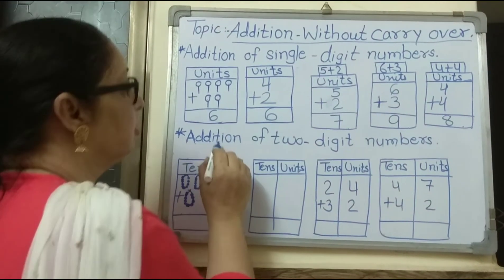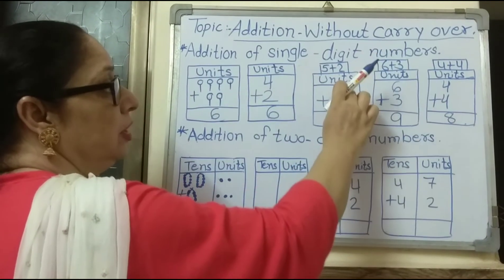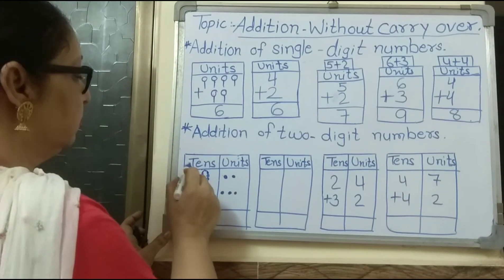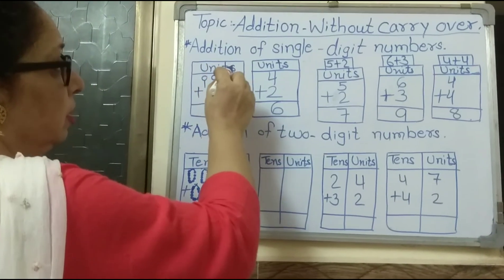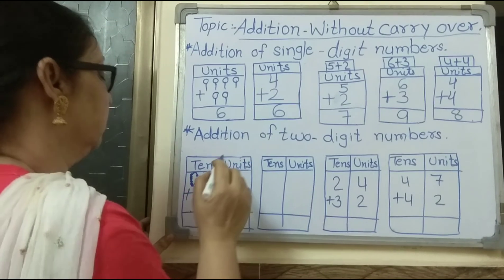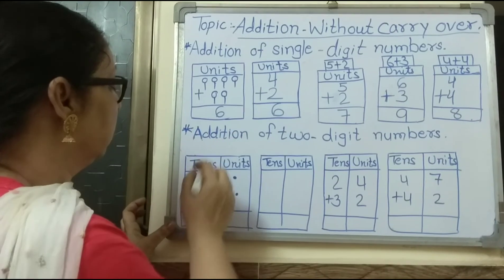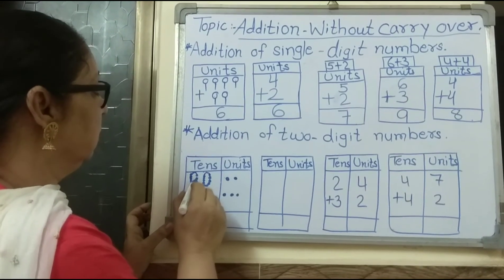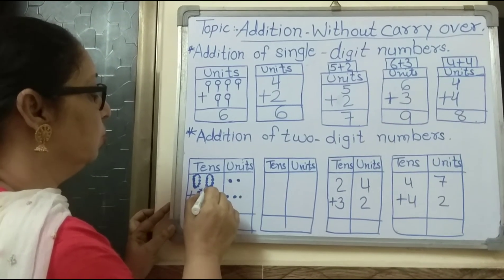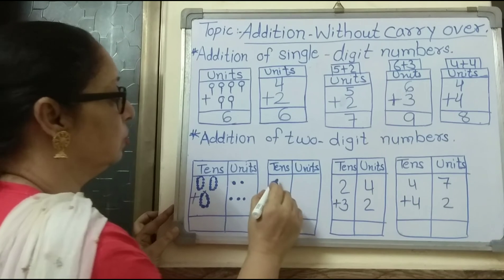Now we move to addition of two-digit numbers. Here we have two columns: tens and units. In the previous examples we had only a units column, but here we have two columns — tens and units. We need to learn place value. Each group of ten is one tenth. There are two groups of ten here.